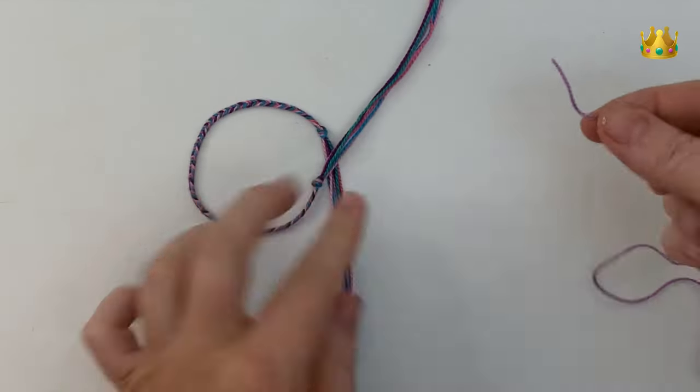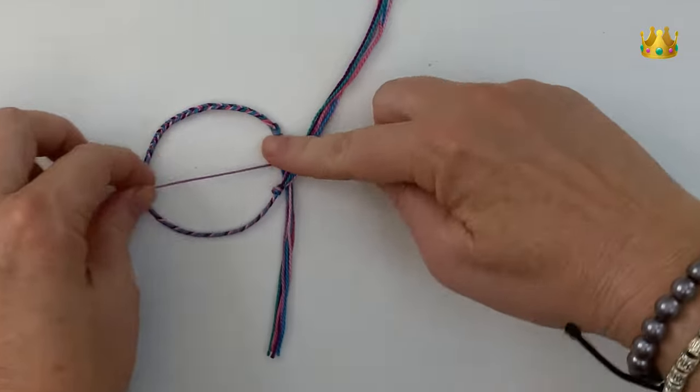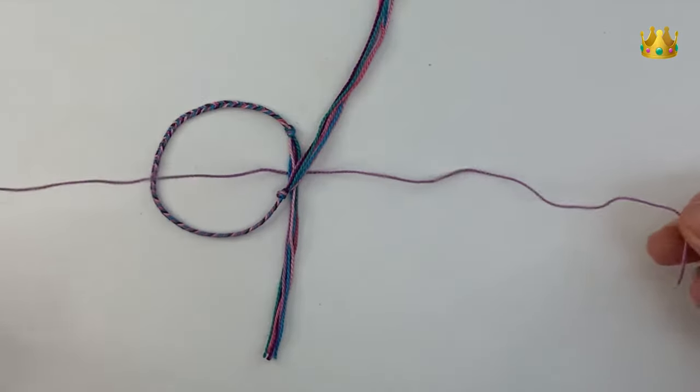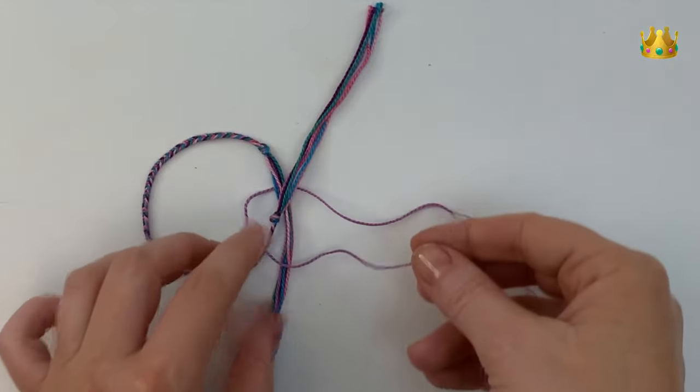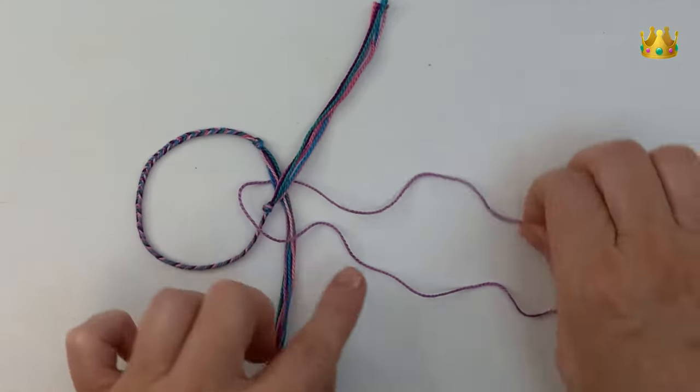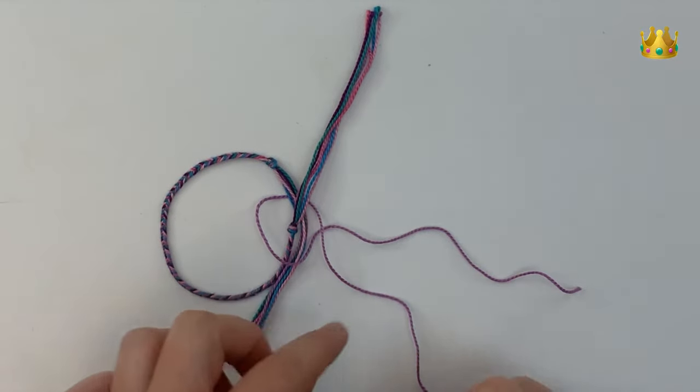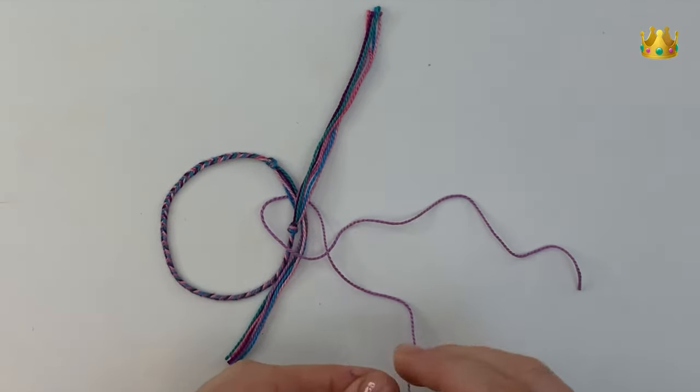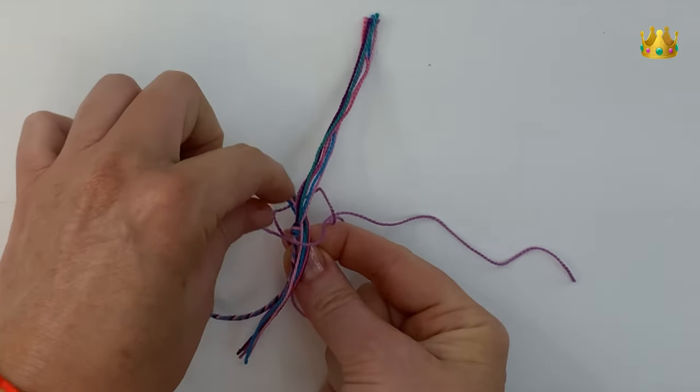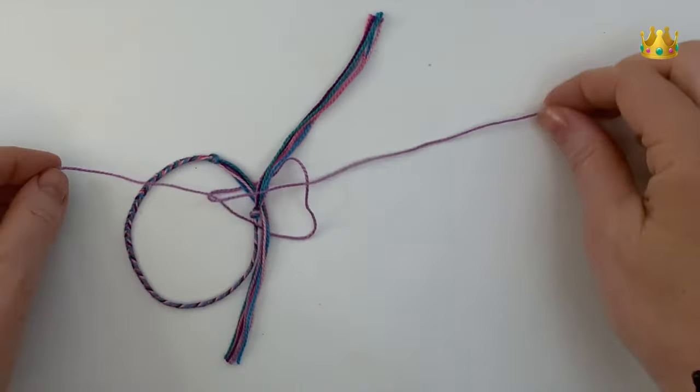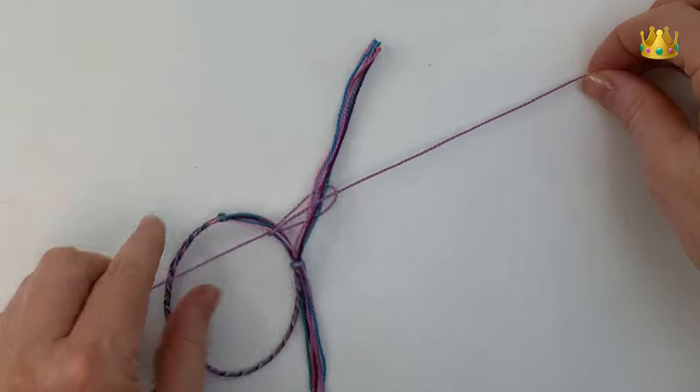To start, we place our thread underneath this section where the cords overlap, pulling that thread to the middle. Now we bring the left side cord around over the top, just leaving a little loop there. The right side cord comes down over this cord and then underneath, bringing it up through that loop on the left hand side. Pull that nice and tight into that section between the two knots.